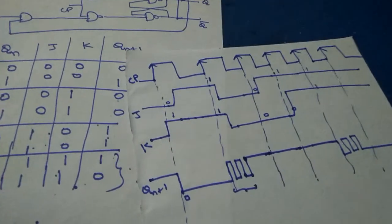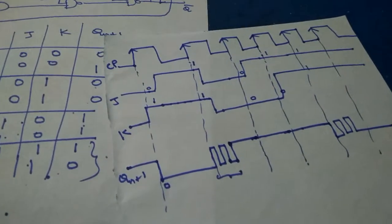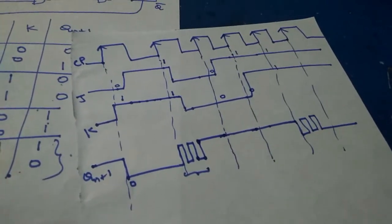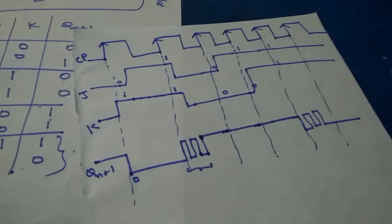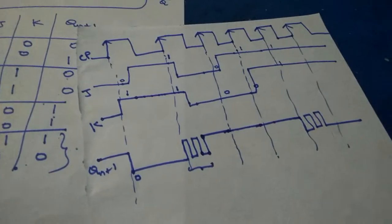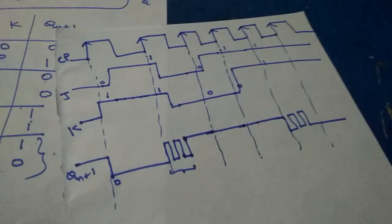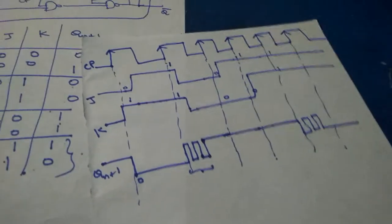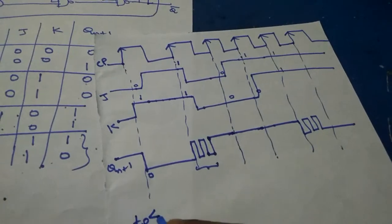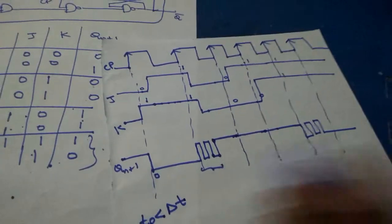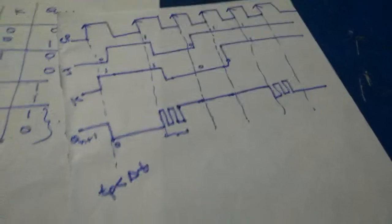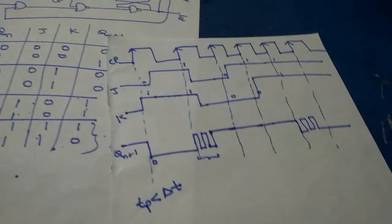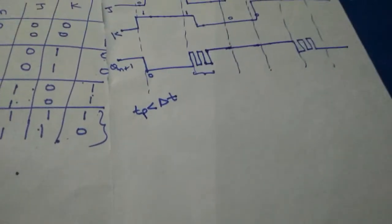The toggle condition exists only in the JK flip-flop at J=1 and K=1. When the clock pulse width TP is greater than the propagation delay delta-t, oscillations occur. This condition is called the race around condition. To eliminate it, TP should be less than delta-t. The race around condition can also be eliminated by using the master-slave JK flip-flop.